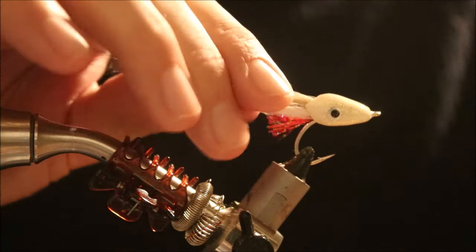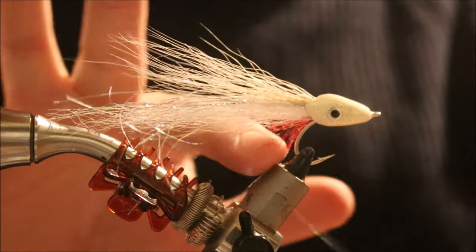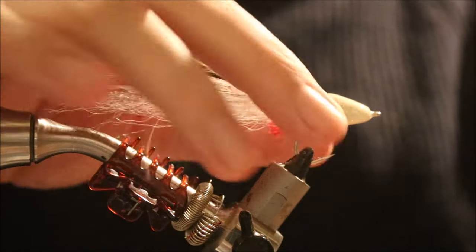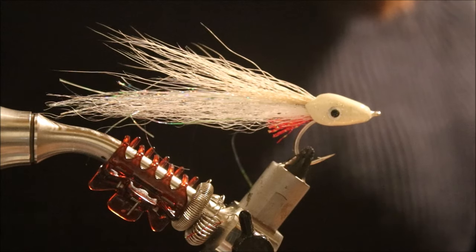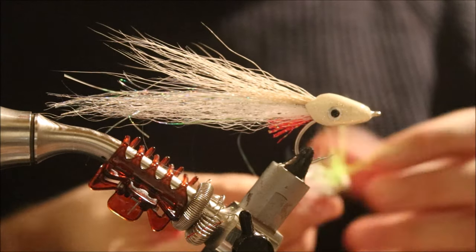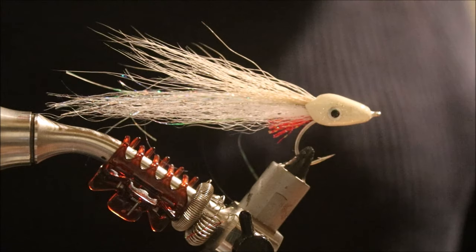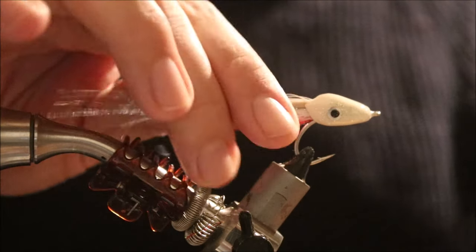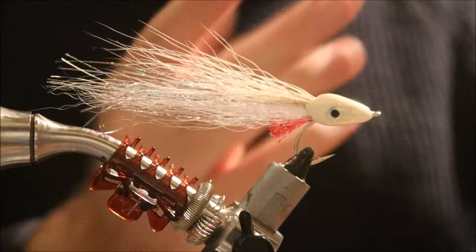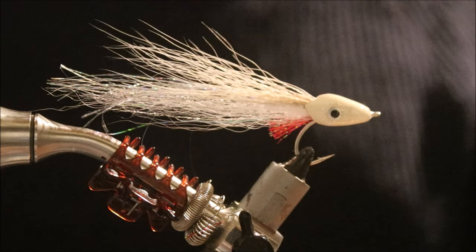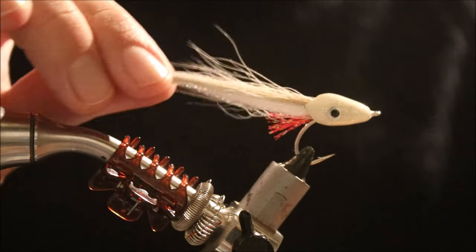That's the Clouser Floating Minnow. I've tied this one in a sort of tan over white, sort of anchovy type color. Obviously you can tie other colors, chartreuse and white, black and purple. Tie them a bit bigger, tie them a bit smaller, to suit the waters you're fishing.